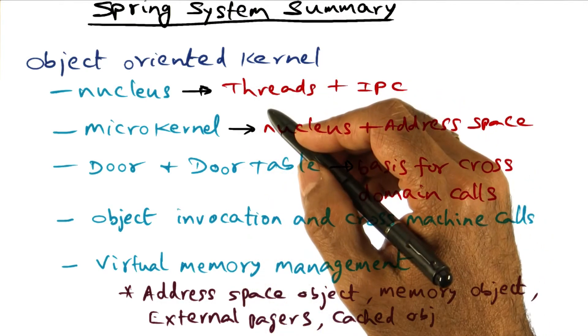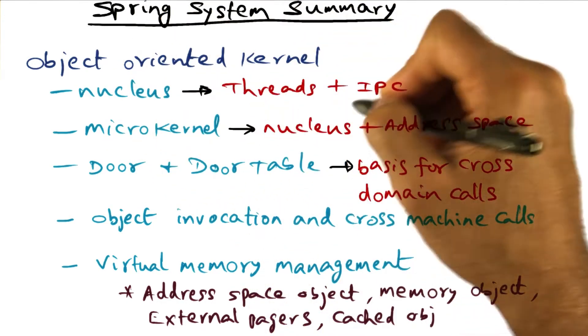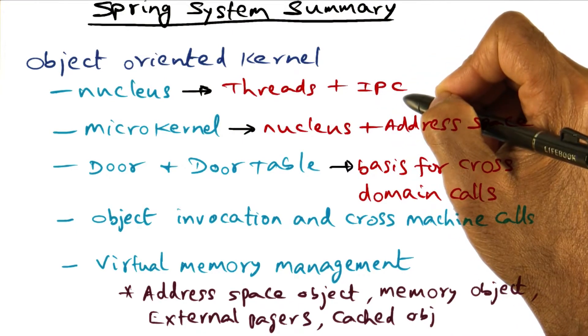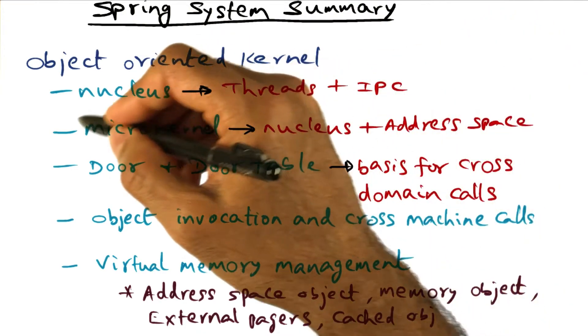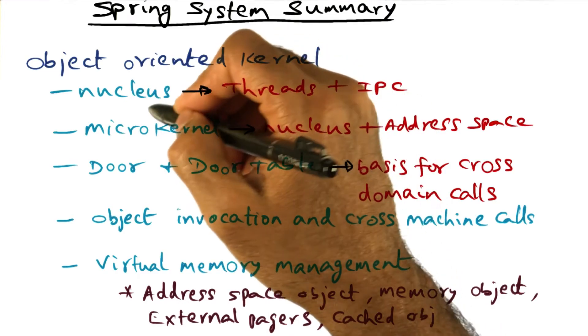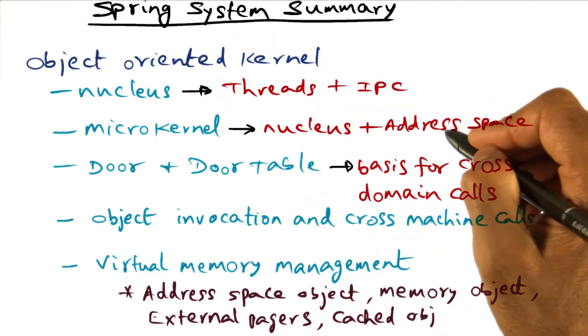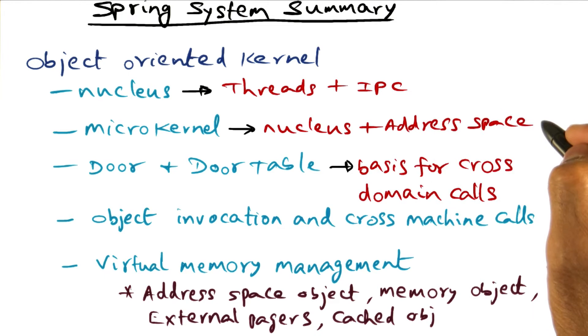To break it down, in Spring system you have the nucleus, which provides threads and IPC among threads. And the microkernel prescription of Leaky is accomplished by the combination of nucleus plus the address space management that is part of the Spring system's kernel boundary.